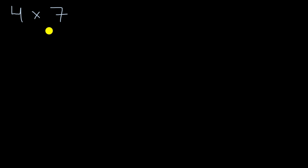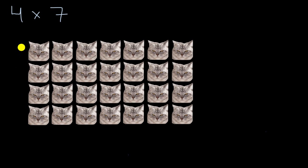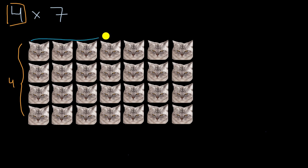There are a couple of ways we can visualize four times seven. My favorite way is to visualize it with angry cats. And yes, they're still angry. We can see that this is a representation of four times seven — we have four rows, and each of those rows has seven cats. Some people would call this a four by seven grid or four by seven array.